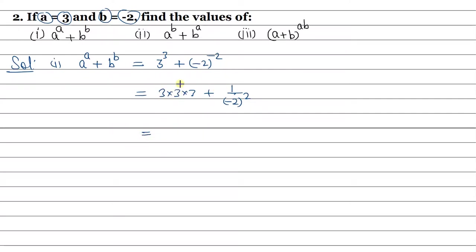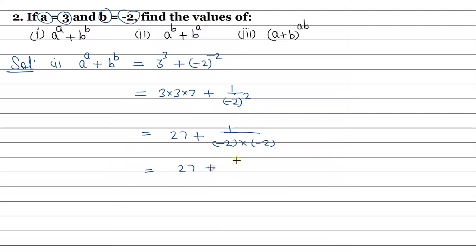Now multiply here: 3 times 3 times 3 gives 27. Plus, we multiply minus 2 two times in the denominator. Minus times minus gives plus, so we get 27 plus 1 upon 4.